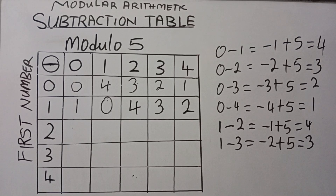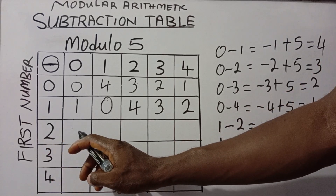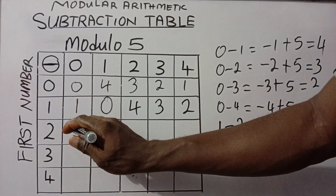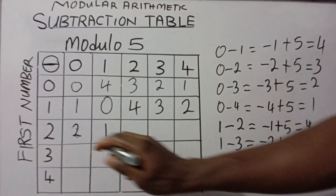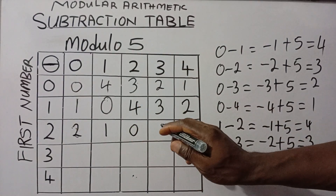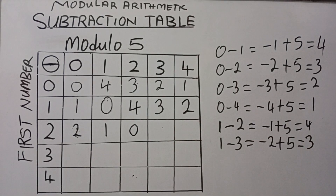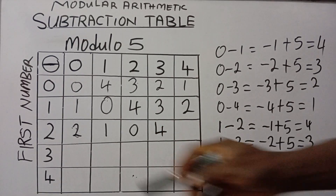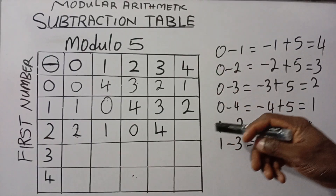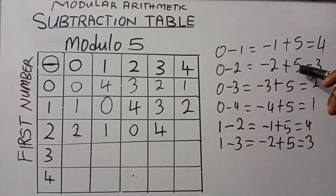So let's fill in the remaining parts. 2 minus 0 will give us 2. Then 2 minus 1 will give us 1. Then 2 minus 2 will give us 0. Then 2 minus 3 will give us minus 1; whenever we have minus 1 you add plus 5 to it, and that gives us positive 4, so we have 4 here. Then 2 minus 4 will give us minus 2; add 5, and that gives us 3.